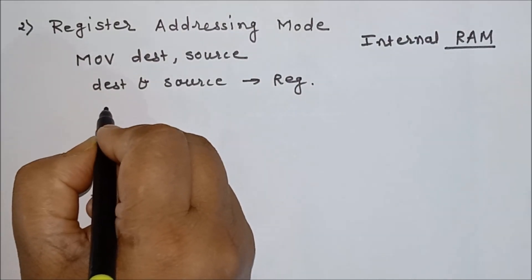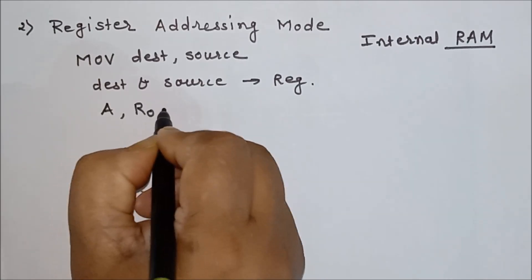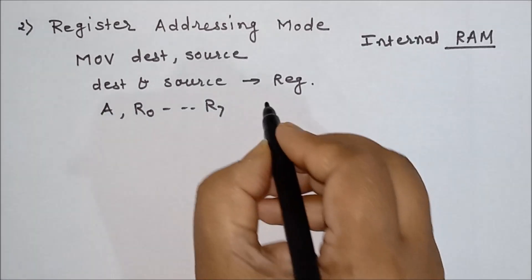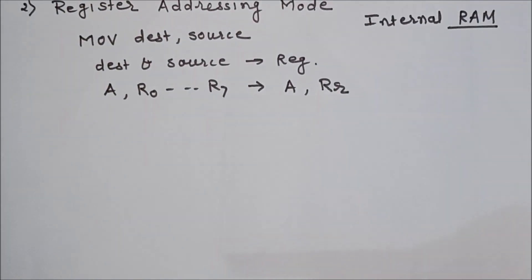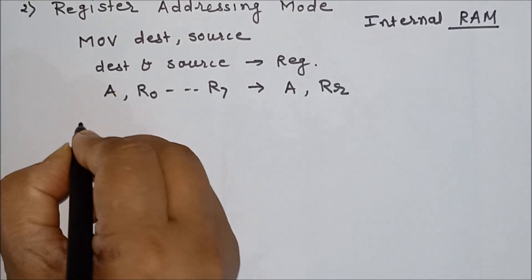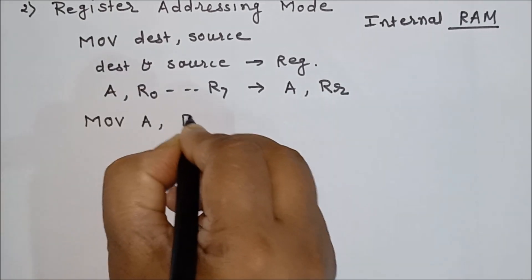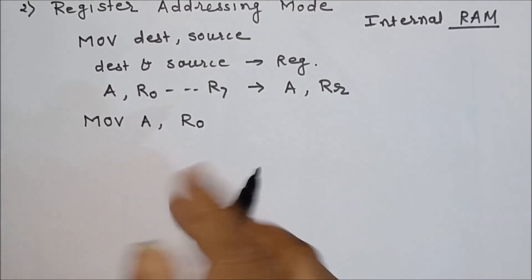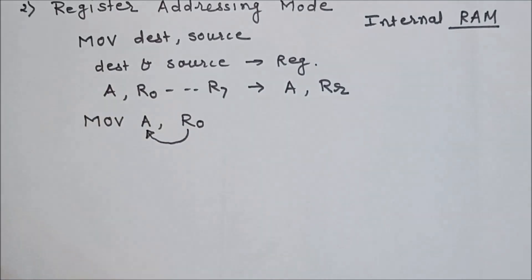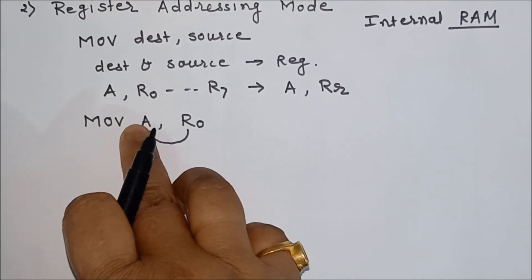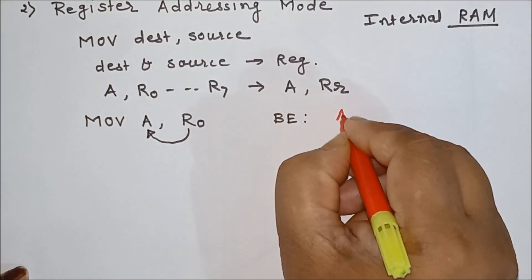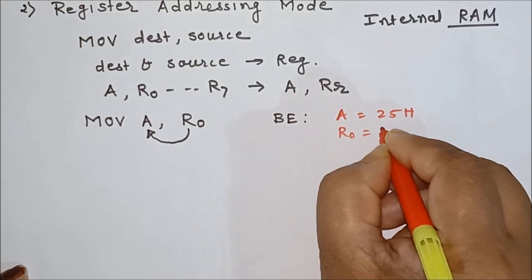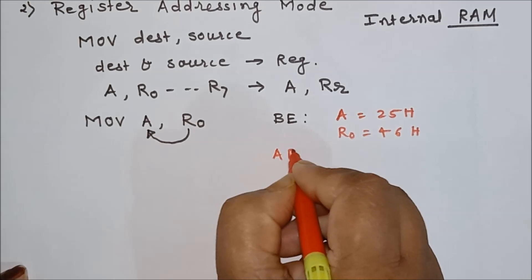You can use accumulator A and registers R0 to R7 of any register bank as destination and source. So both source and destination are registers. As an example, we can write: MOV A, R0. After execution of this instruction, the contents of R0 will be moved into the accumulator, while the contents of R0 remain unchanged.